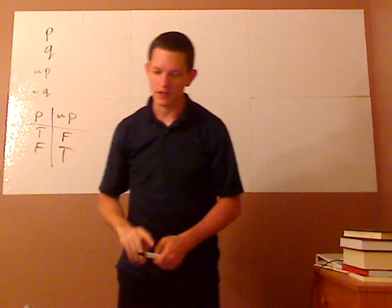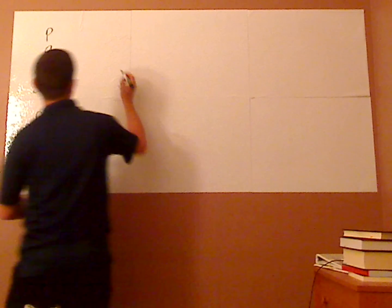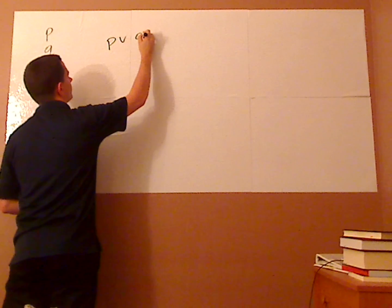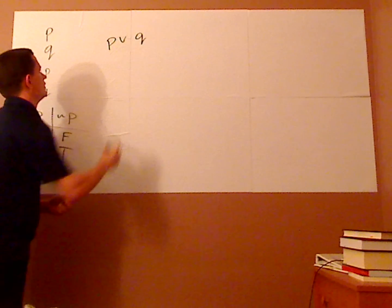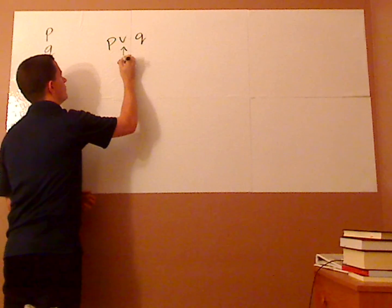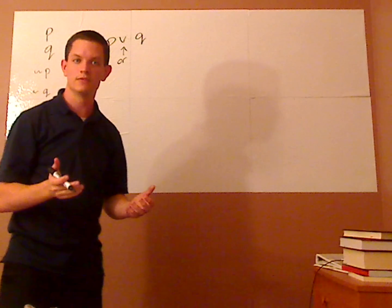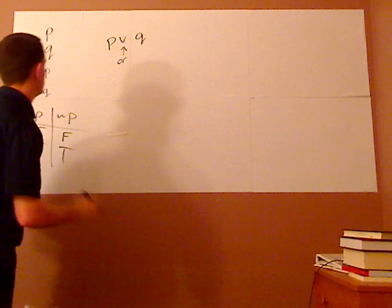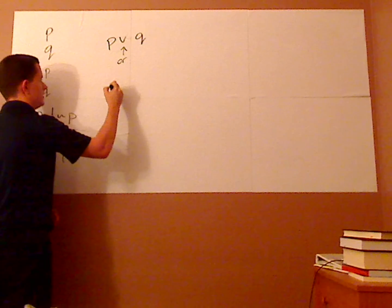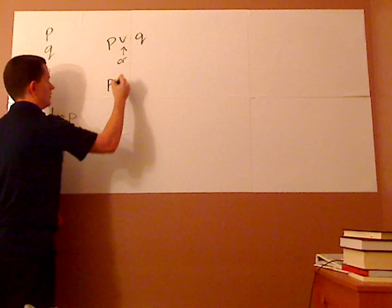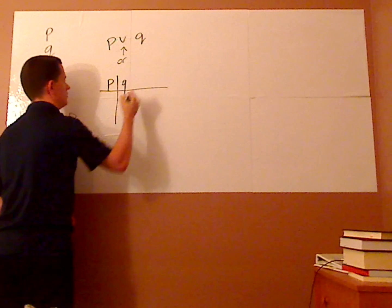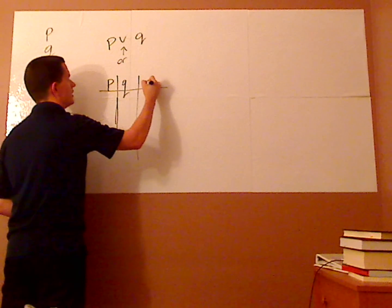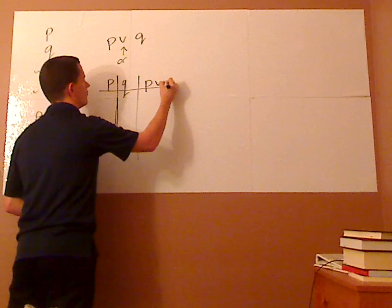Another symbol you might see is the OR symbol — you have P or Q. This symbol means 'or,' so it's an either-or statement: one or the other. I'm going to use a truth table, and I have P's and Q's and then the column for P or Q.